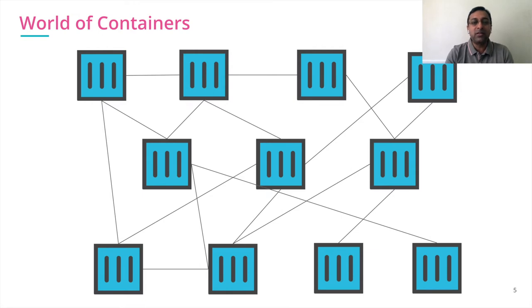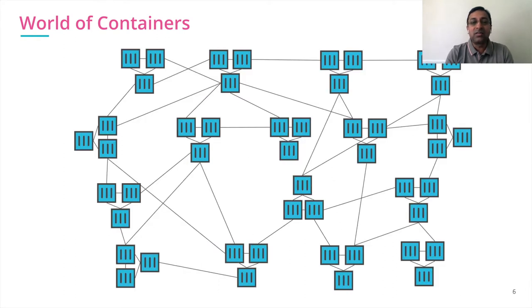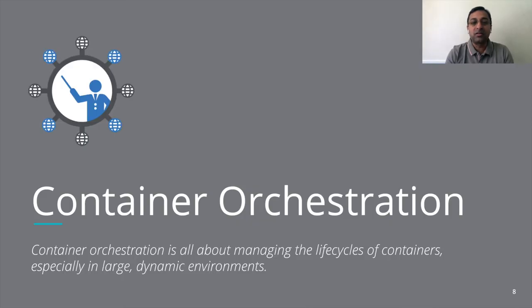We have 20, 50, 100 microservices to manage and things get complicated. With the scale, it is further complicated — you have thousands of containers to manage. What happens if some container goes down? How do you manage the lifecycle of the container? This becomes tricky, and this is where we need container orchestration or a container orchestrator.